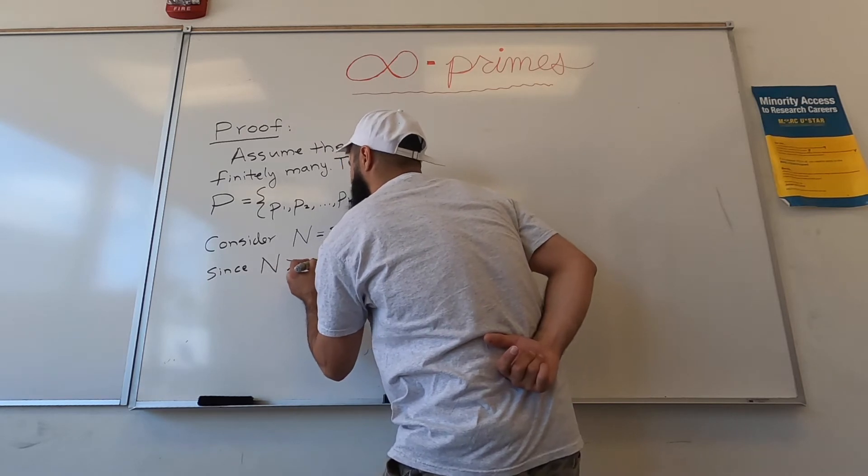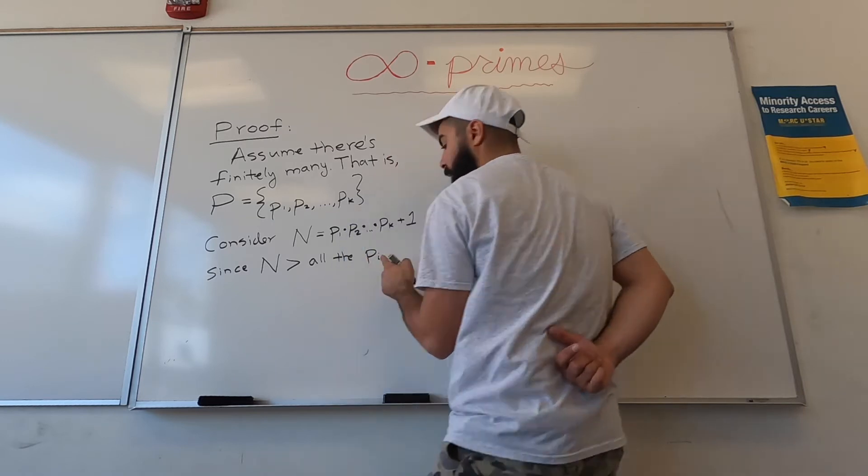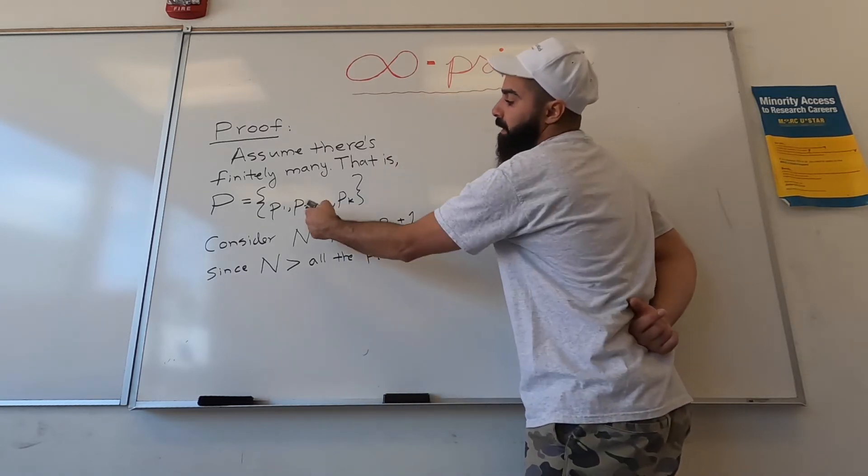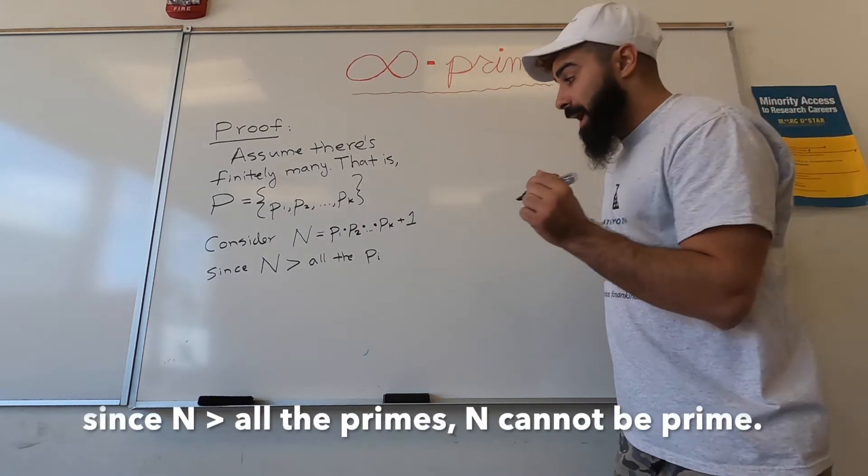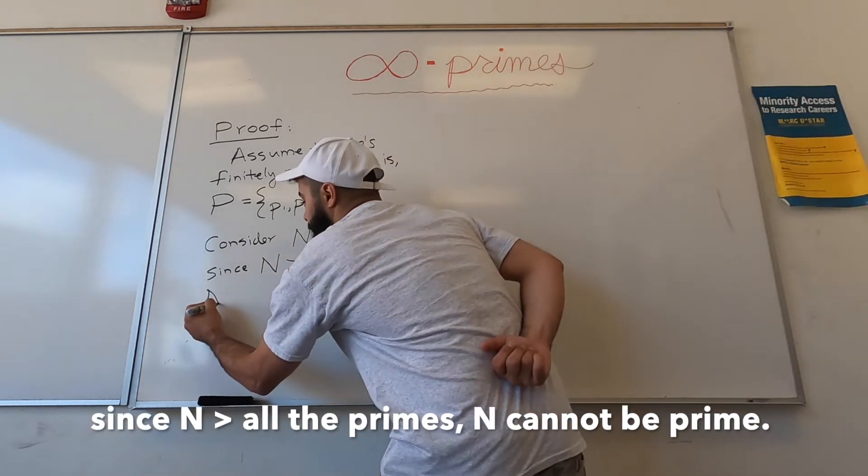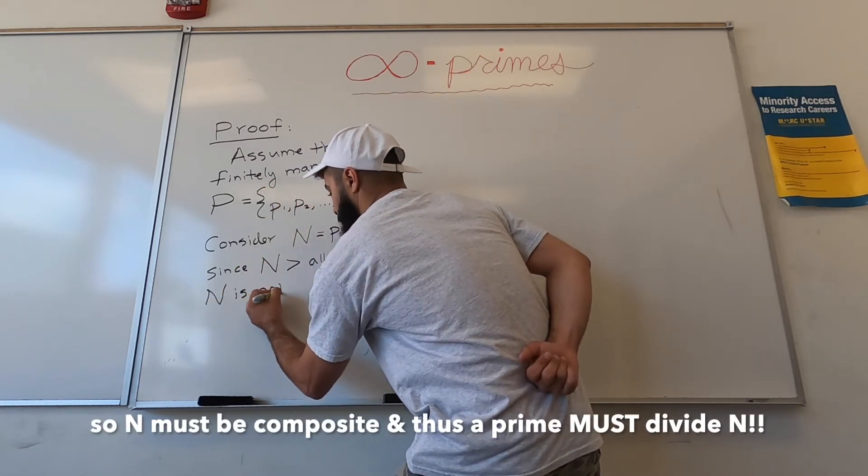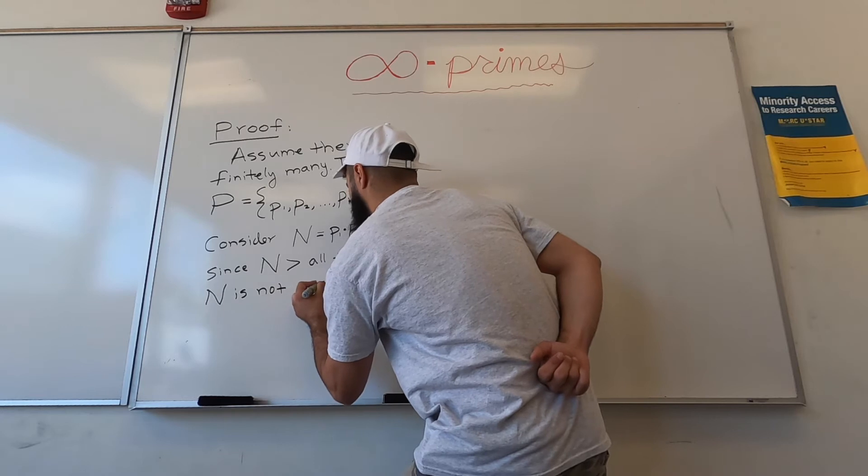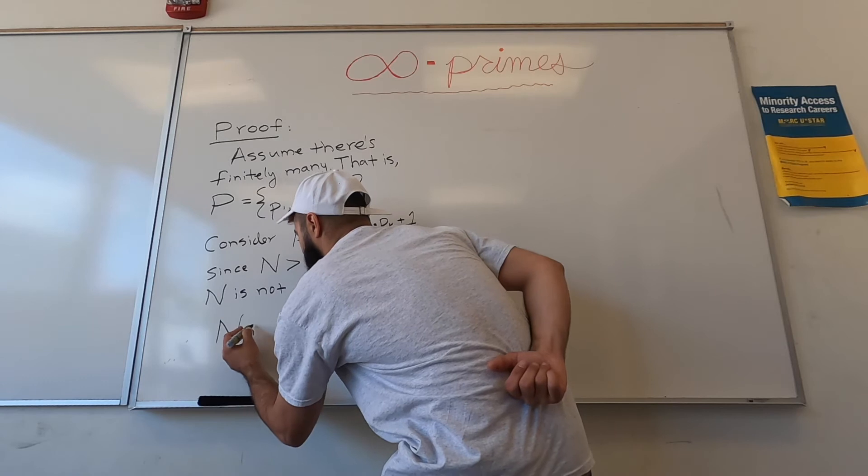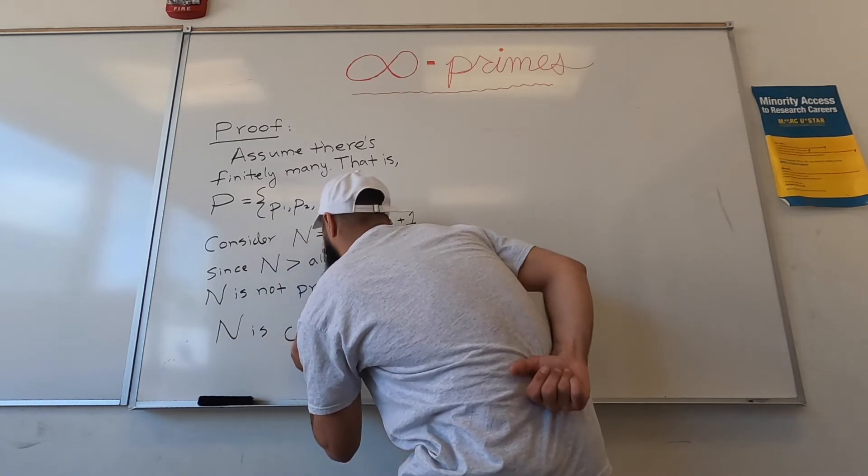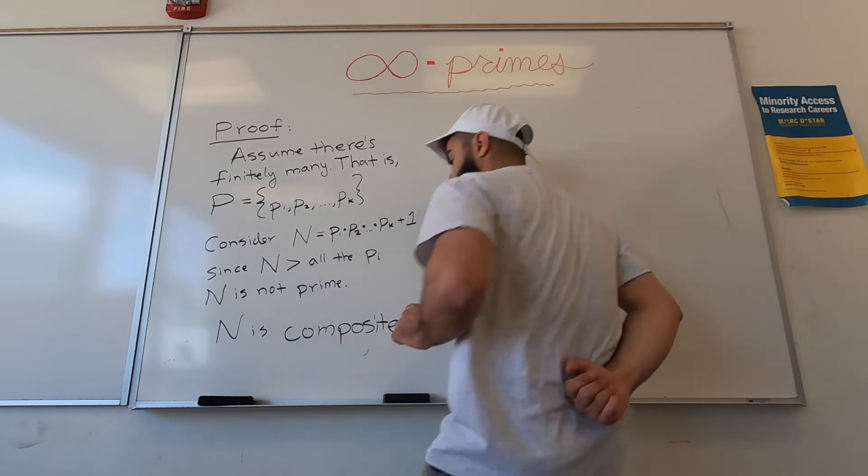Since this number N is bigger than all the pi's - pi just means it can be anything from one through k - that means N cannot be prime. It's not in that list. It's bigger than all of them. And if you're not prime, you must be composite. So N is a composite number.